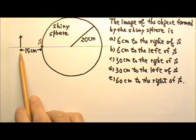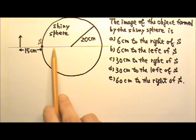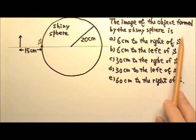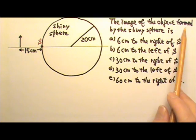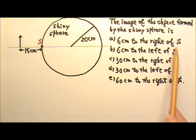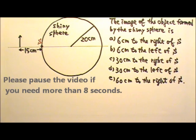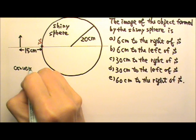An object is 15 cm in front of the surface of a shiny sphere with radius 20 cm. Which of the following is correct regarding the image of the object formed by the shiny sphere? The point S is this point right here. This shiny sphere is a convex mirror.